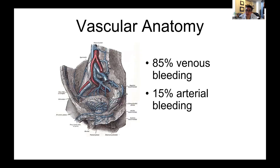Coupled to the bony anatomy is the vascular anatomy, and this is why these injuries are potentially life-threatening. There's a very rich blood supply running through the posterior aspect of the pelvis — the large iliac arteries and veins — and in addition there's a rich venous plexus surrounding the posterior sacrum called Batson's plexus and the pelvic floor. When you have significant disruption of the pelvis, these vessels can be torn and there's a lot of bleeding. Most of the bleeding tends to be venous, but there can be arterial bleeding as well.